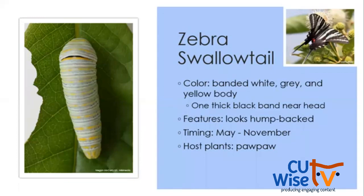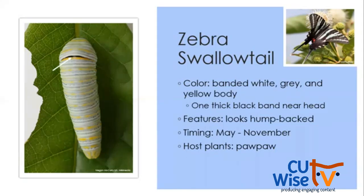My personal favorite swallowtail is the zebra swallowtail. I was so excited when I found one in my backyard last year. Its caterpillar is relatively unique with a white, yellow, and gray banded body and one black band behind the head. It also looks humpbacked. May through November, you can find them on pawpaw trees.